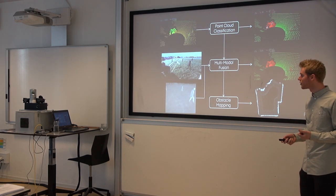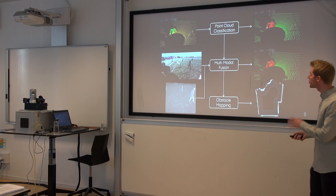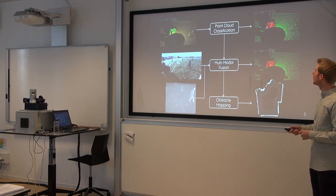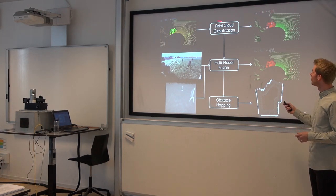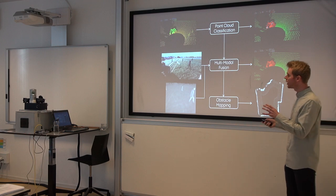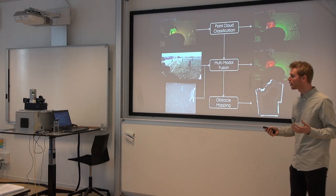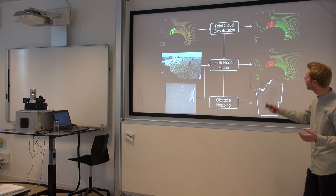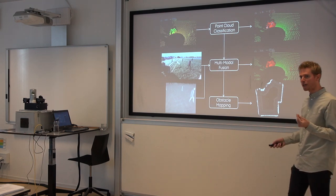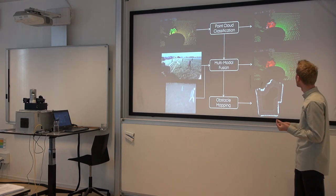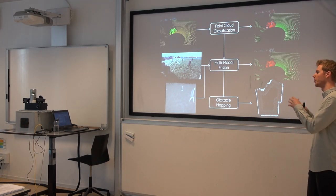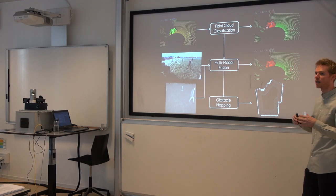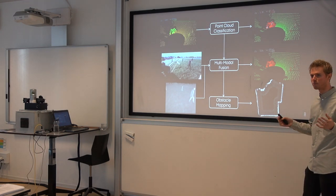To answer these questions, I have looked at three major tasks. The first, which I'd like to present today, is called point cloud classification. It deals with taking a raw 3D point cloud as input and assigning each point an object label — whether it belongs to the ground, represents an object, or is part of vegetation such as trees and bushes.